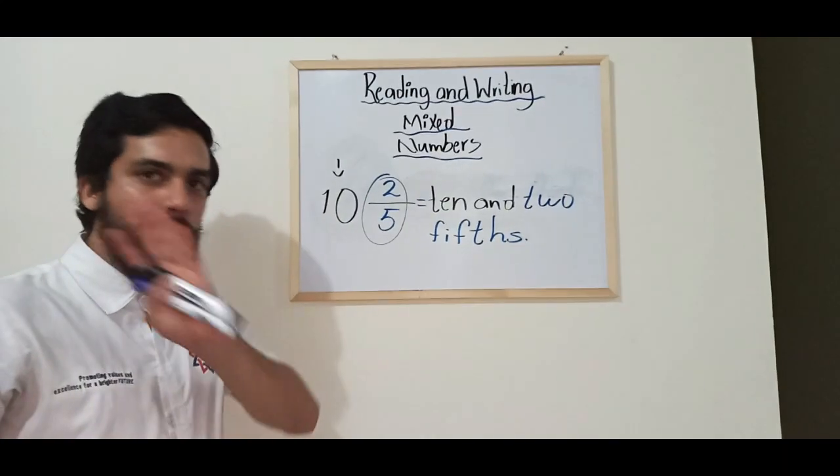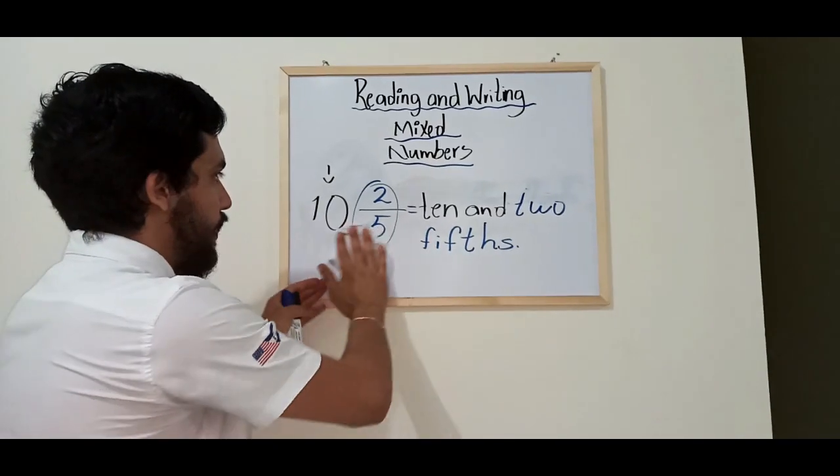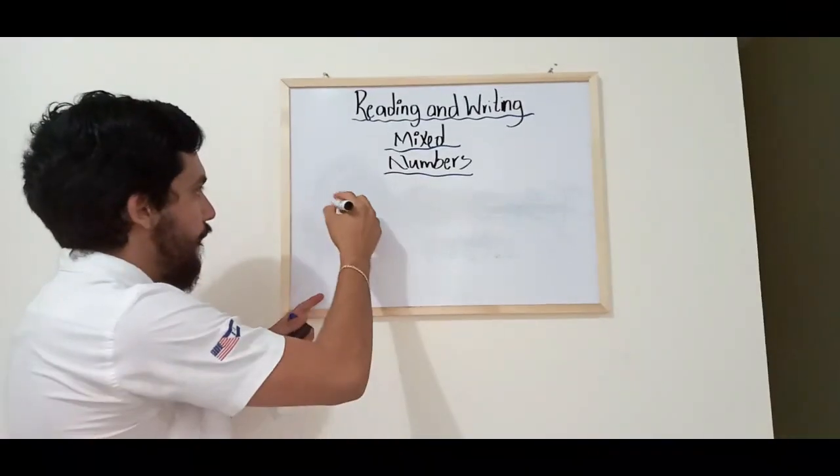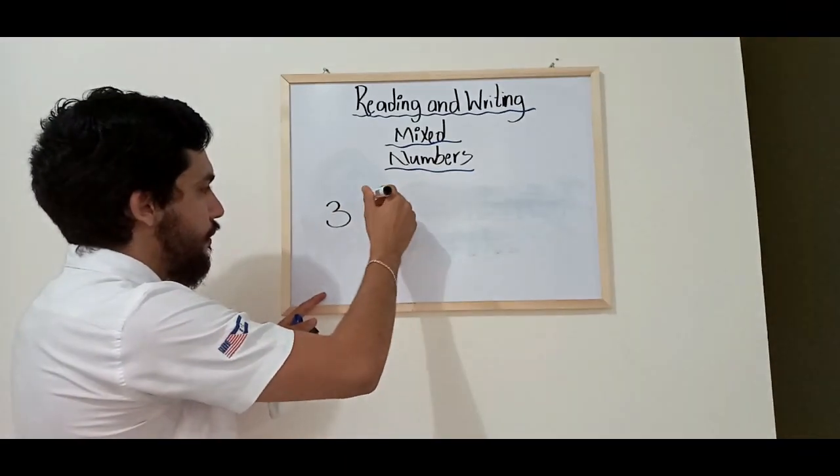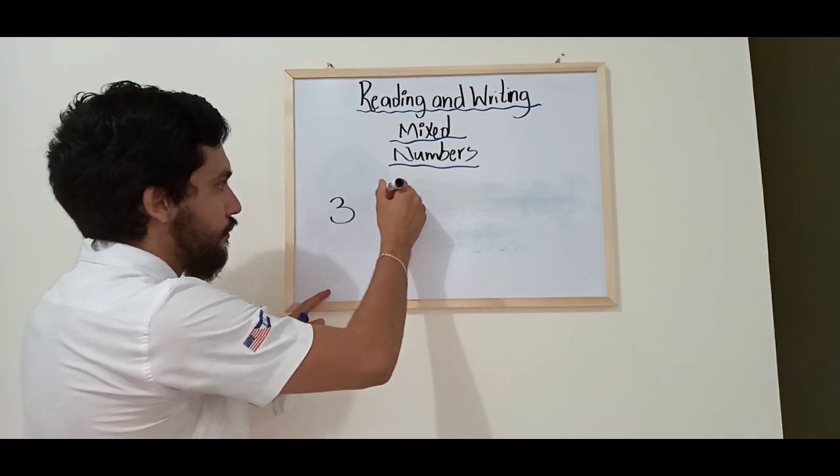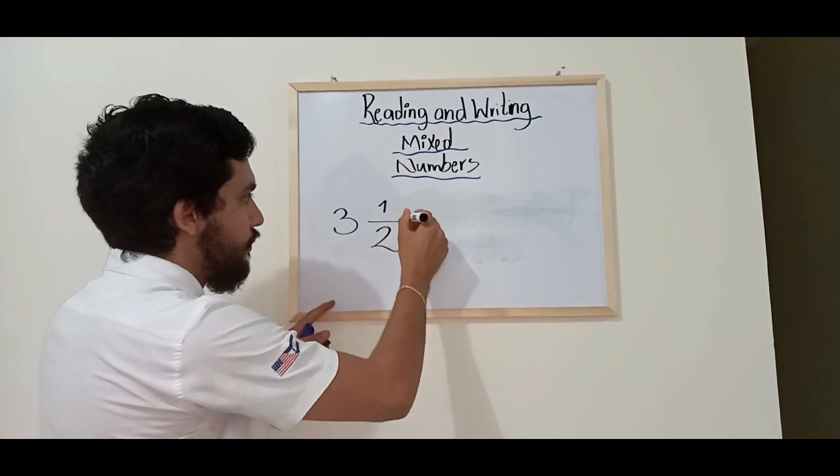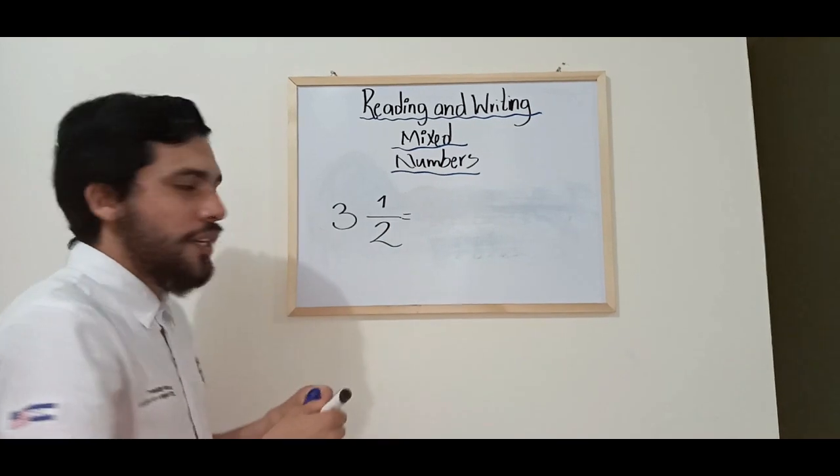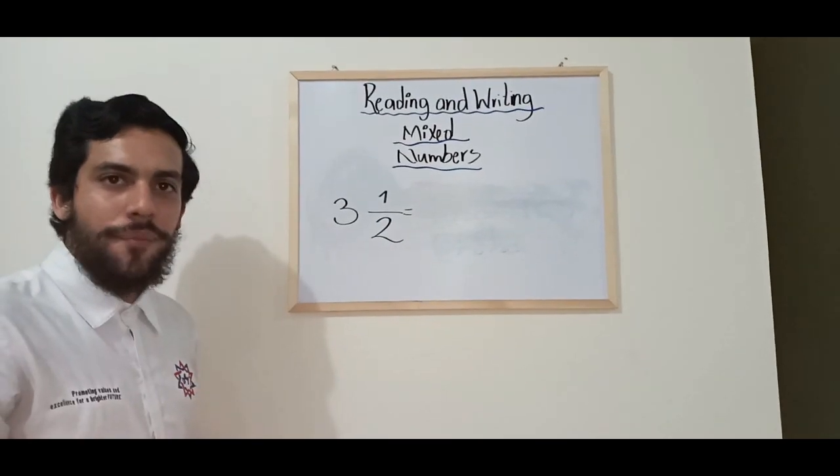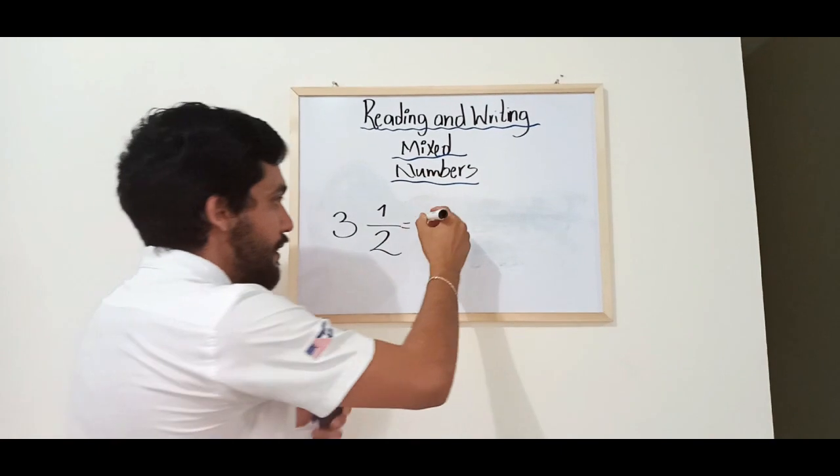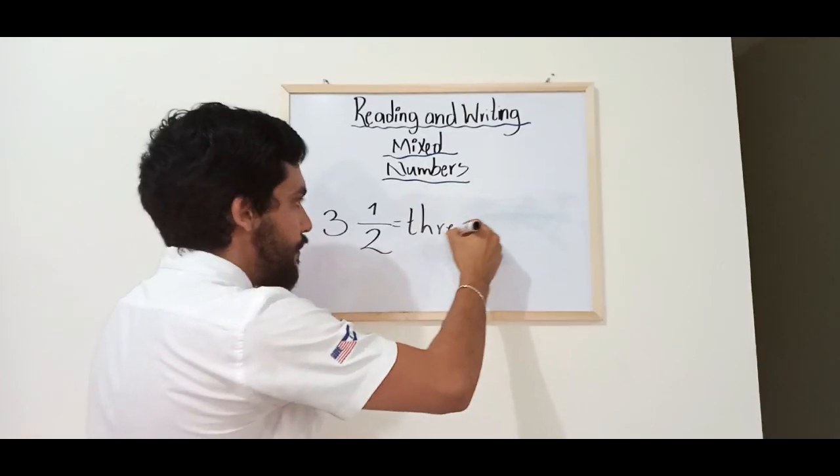And I'll give you the last example, guys. It's going to be this one. So how do we read this number? Remember, what is the name of this number? The name of the number is 3.